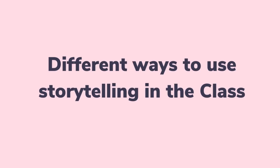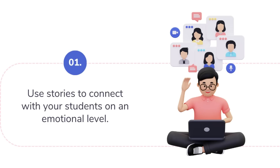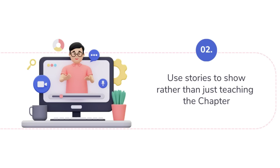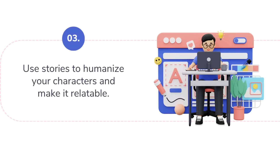First, know your audience and how to deliver your message accordingly. For example, if you are telling a story to children, you might use simple words and colorful illustrations. The next point is to use a clear structure with a beginning, middle, and end. For example, you can start with a hook that grabs the attention of the listeners, then introduce the main characters and conflict, and then resolve the conflict and end with a lesson or takeaway.